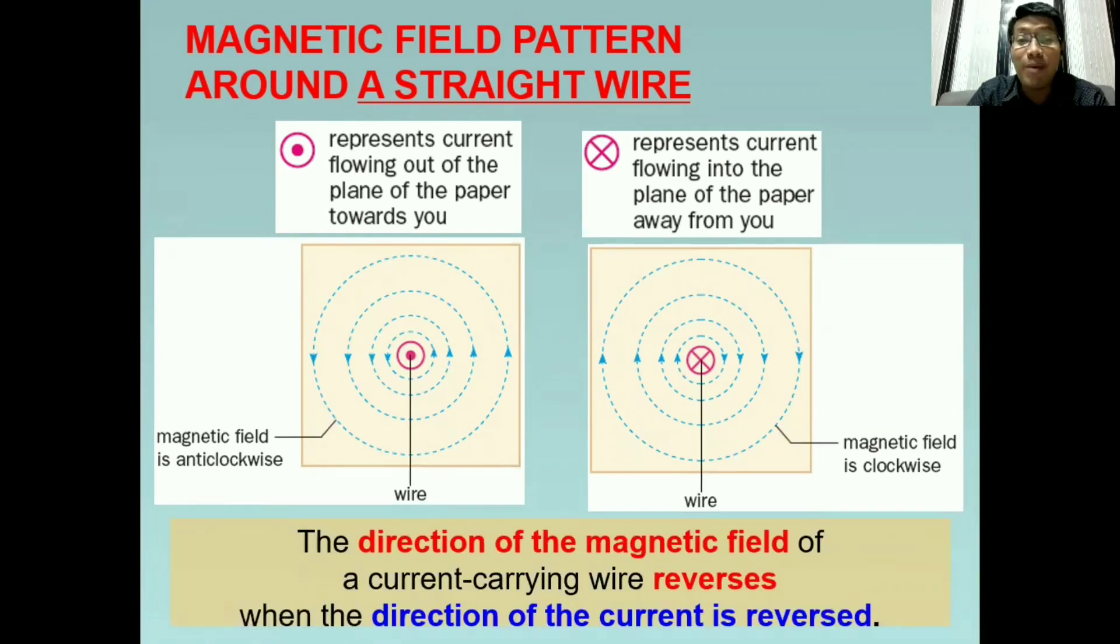We have to remember that the direction of the magnetic field of a current carrying wire reverses when the direction of the current is reversed. So ito yung sagot dun sa isa sa mga tanong kanina. Tatandaan lang pag pinalitan natin ang direction ng current nagbabago din ang direction ng magnetic field.